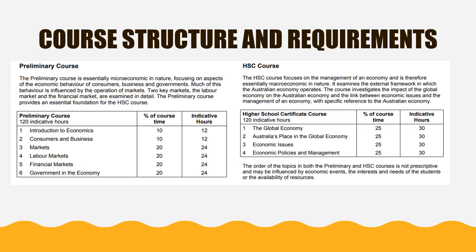The Economics course is divided into preliminary topics studied in Year 11 and HSC topics studied in Year 12. The Year 11 Preliminary course has six topics studied in Terms 1 to 3, and the HSC course has four topics studied over four terms. The Year 11 course sets up foundational knowledge looking at microeconomic policies such as markets in the financial and labour industry, while the HSC course looks at macroeconomic policies that affect the whole country and region.